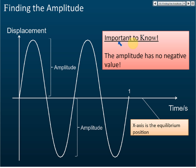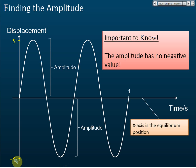It's important to know that amplitude has no negative value. For example, if this point is 5 cm and this point is negative 5 cm, and you take this lower point to find the amplitude, your amplitude should be 5, not negative 5. Do not give amplitude a negative value — even though the displacement at that point is negative 5, the amplitude is 5.